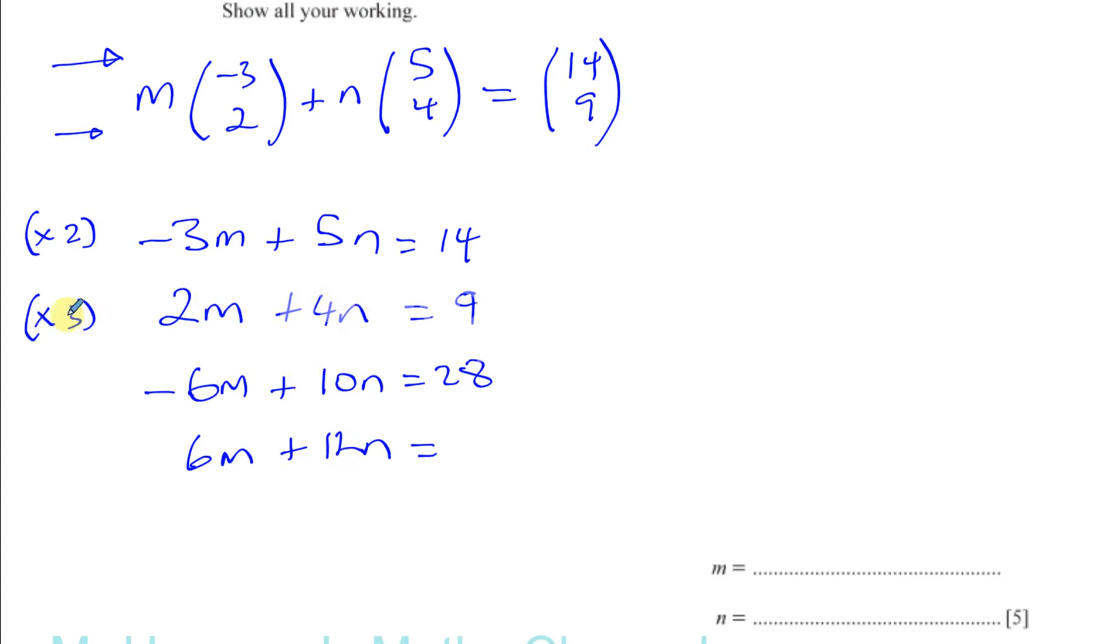Now what I have to do is I have to add these two equations together so that I can eliminate the m's because I have different signs. So I'm going to have 22n. And you've got 28 plus 27, that's going to be 55. So n is equal to 55 over 22, which both of them 11 go into, so it's going to be 5 over 2. So n is equal to 5 over 2.